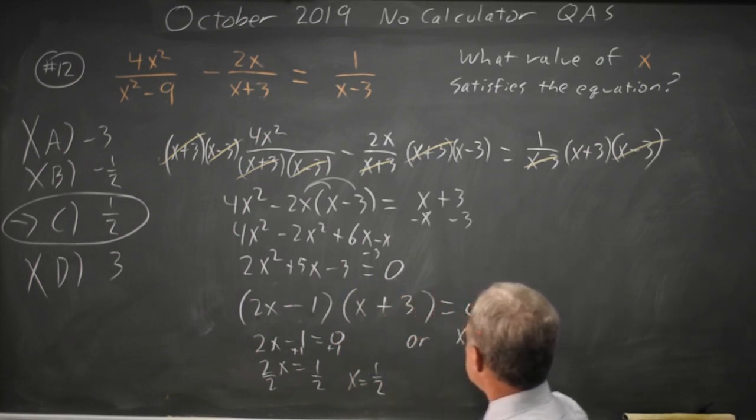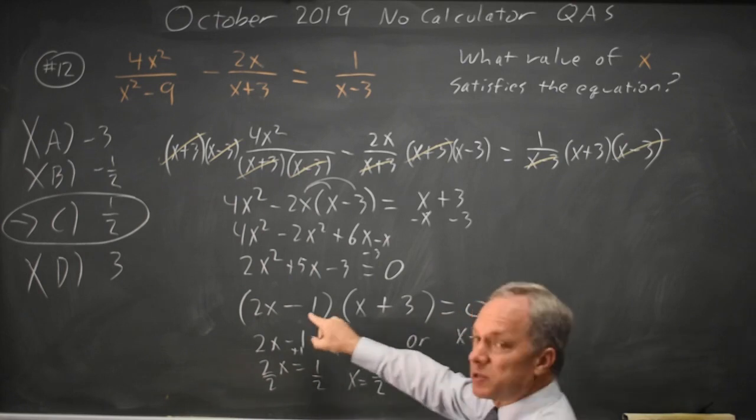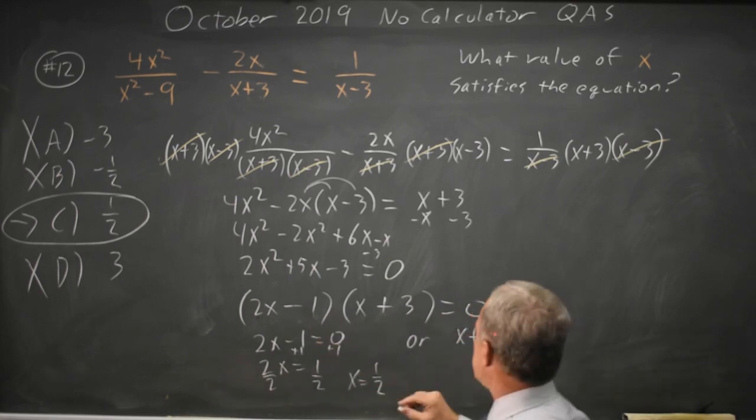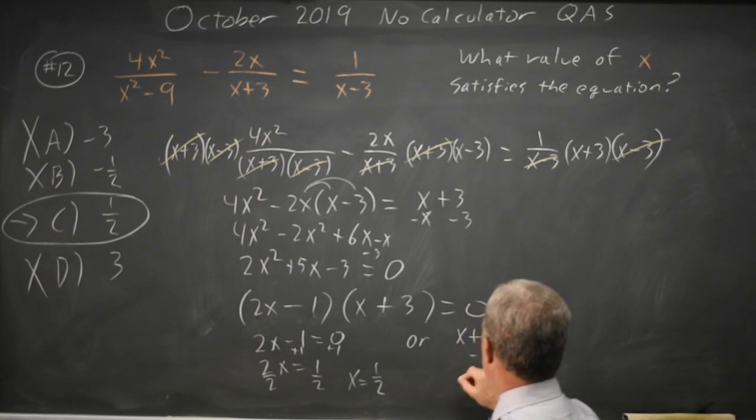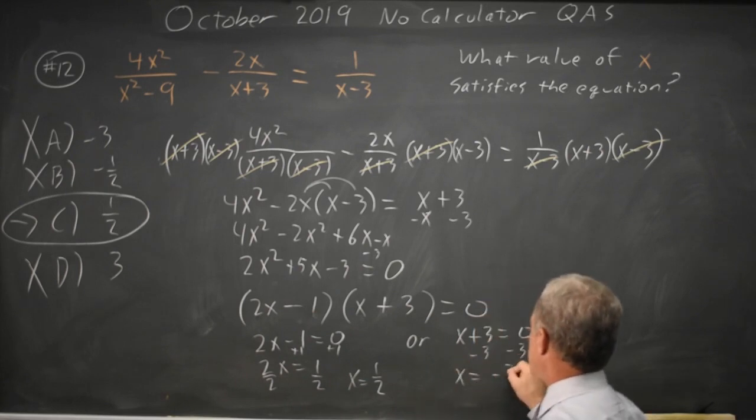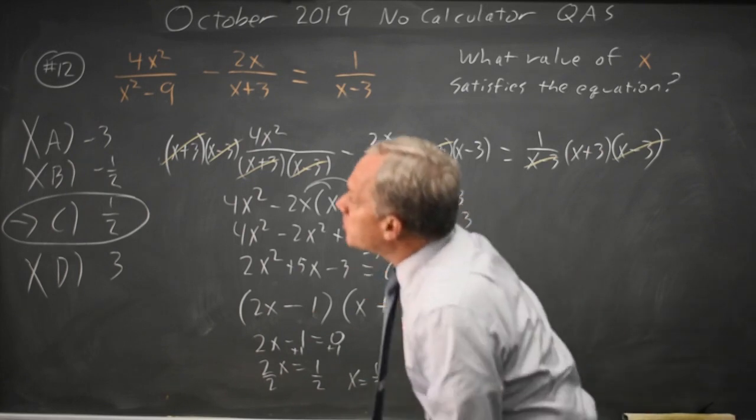Or, x plus 3 equals 0, because if this product is 0, either factor could be 0. Subtract 3 from each side and get x equals negative 3. That's choice A.